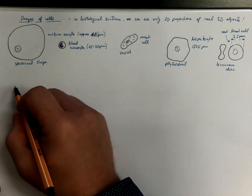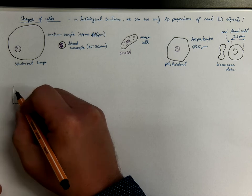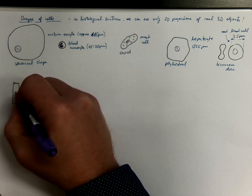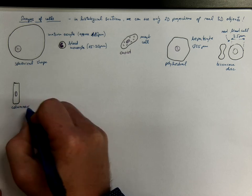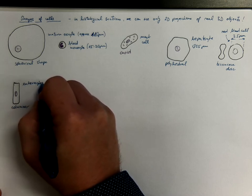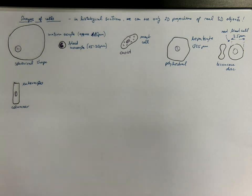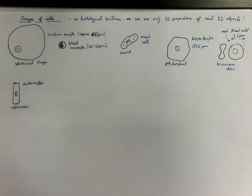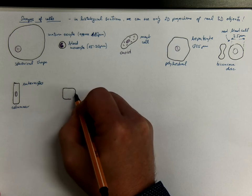Let's mention other examples. Next one would be columnar shape. And a good example would be enterocytes. That's epithelial cells lining small intestine and large intestine. So we can see one of the dimensions exceeds the other dimensions, unlike cuboidal shape where you have comparable diameter in all three dimensions.